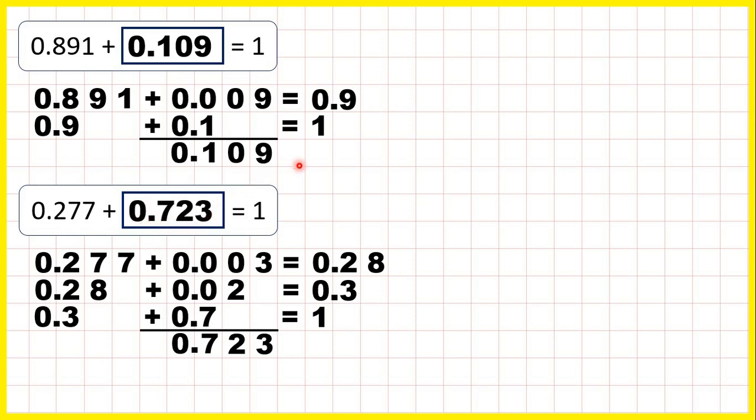As well as counting on, the other method would have been to use column subtraction, because whenever we have a missing number addition, we can use subtraction to find the missing number. But it's important that we remember to write the zero ones that we have in our decimal below the one whole, so that our place values are lined up.